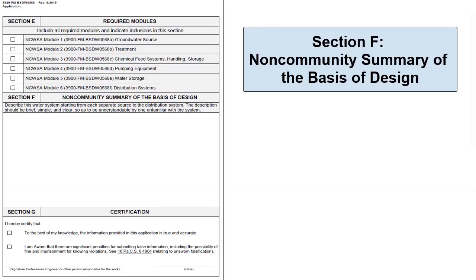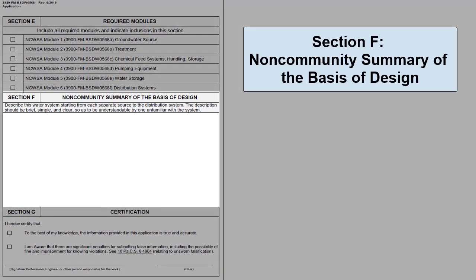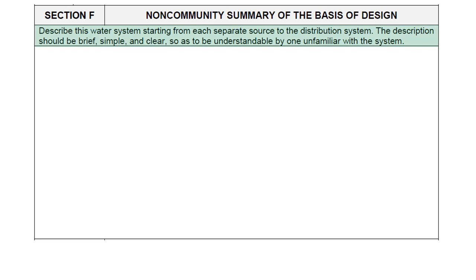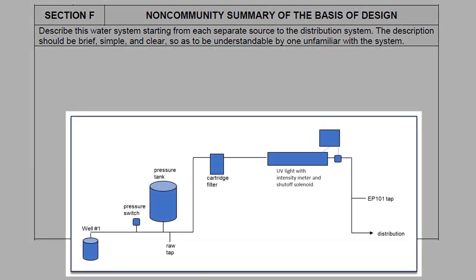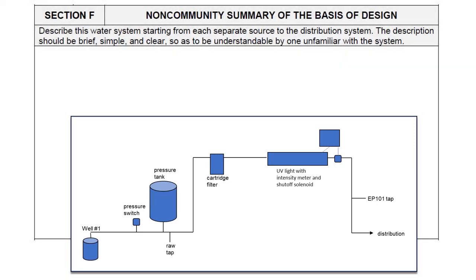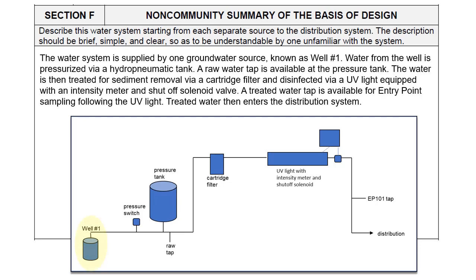Section F, Non-Community Summary of the Basis of Design, shall include a written description of the water system. The written description shall start at each source and continue through to the distribution system. Here is a schematic for a system with a well, cartridge filter, and UV light. The written description of this system might be: the water system is supplied by one groundwater source known as well number one. Water from the well is pressurized via a hydropneumatic tank, and a raw water tap is available at the pressure tank. The water is then treated for sediment removal via a cartridge filter and disinfected via a UV light equipped with an intensity meter and shutoff solenoid valve. A treated water tap is available for entry point sampling following the UV light, and treated water then enters the distribution system.